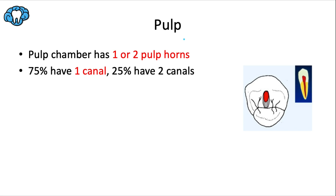Most of the time, the number of cusps equals the number of pulp horns. We have two cusps — facial and lingual — so we usually have two pulp horns, which is true to a degree. But the lingual cusp can sometimes be too small, resulting in just one pulp horn. That makes it the only posterior tooth in the entire mouth that can occasionally have just one pulp horn, rather than what you'd expect based on cusp count.